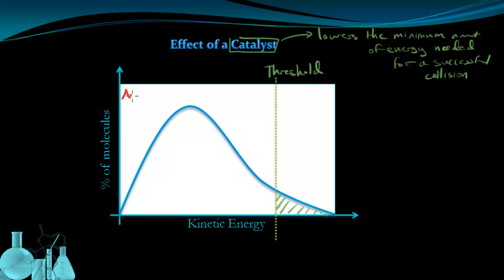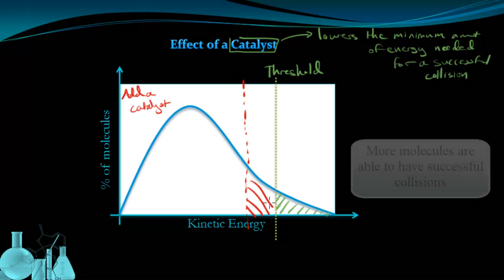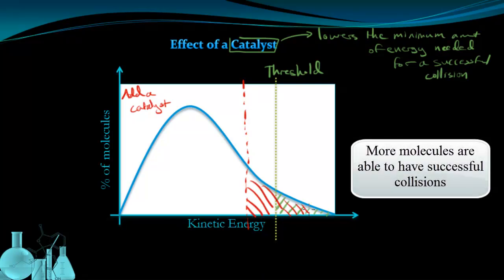So if I add a catalyst, it doesn't affect the kinetic energy of the molecules, so the shape of the graph does not change. But it does move this threshold energy line lower, okay, lower down the kinetic energy axis. So now instead of having just this small amount of molecules on the right that can have a successful collision, I've now also added this area in. And this is now the new area that represents the number of molecules that can have a successful collision.